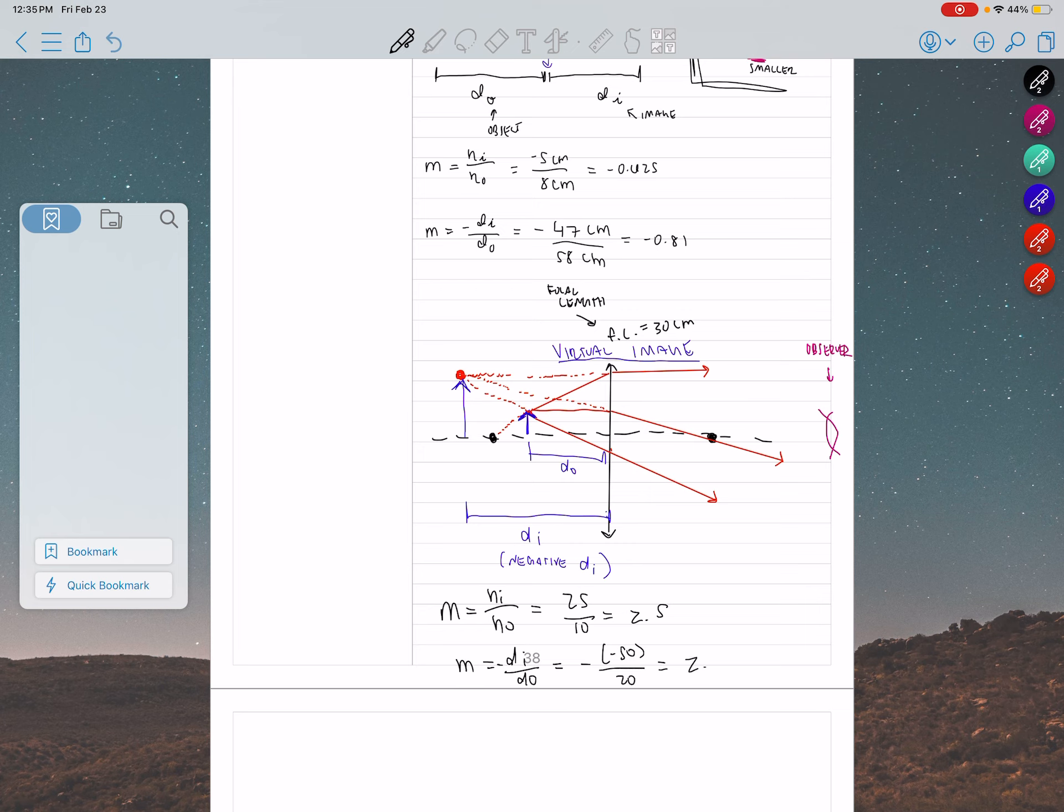Now, the fact that we have magnification to be positive just means that the orientation of the image has the same orientation as the object. And that's true of virtual images. The image is always going to have the same orientation as the object, and all of them are going to be on the same side of the lens.